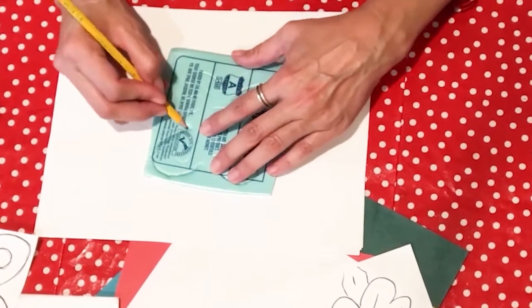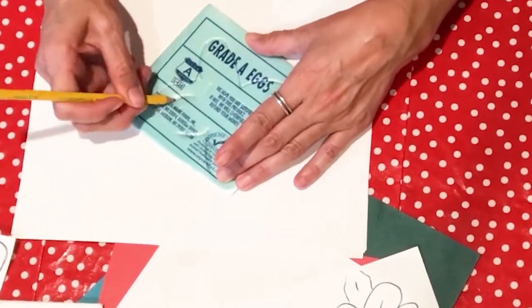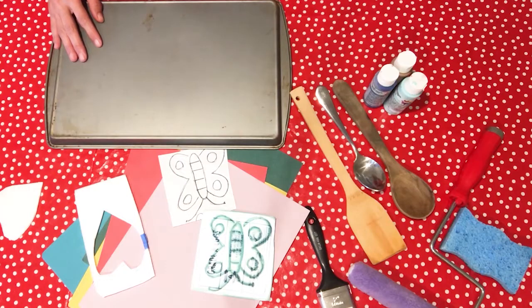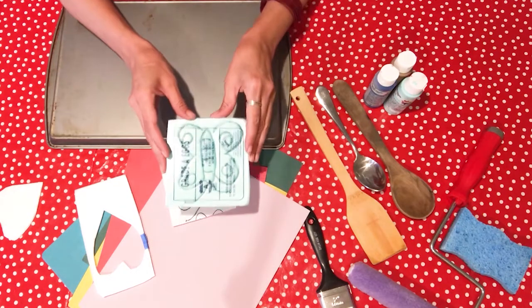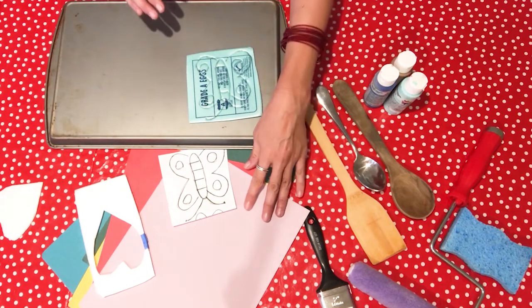But don't worry, if you do bust through, your block print will still print just fine. Next, we will ink up our print, press it to our construction paper, and see the results.